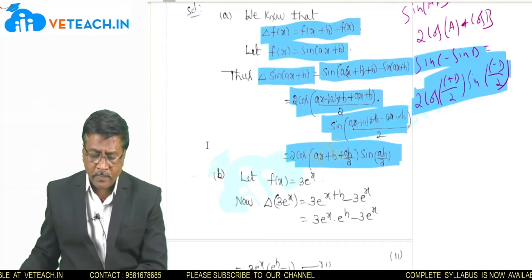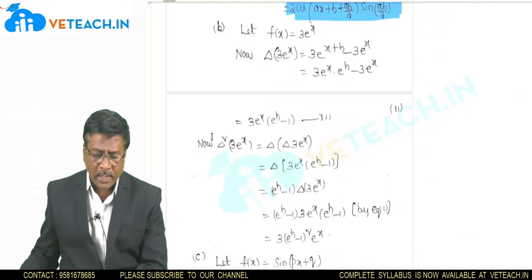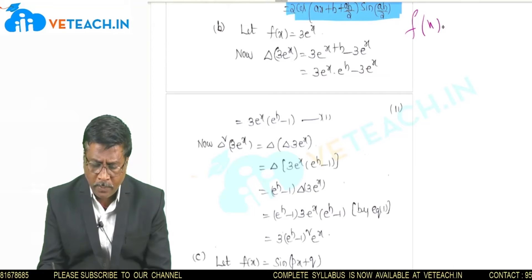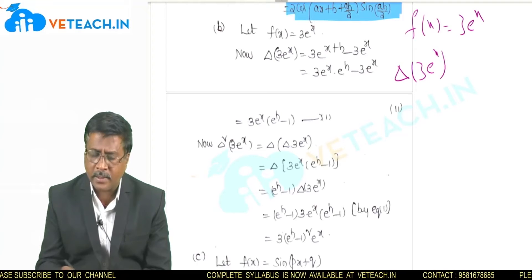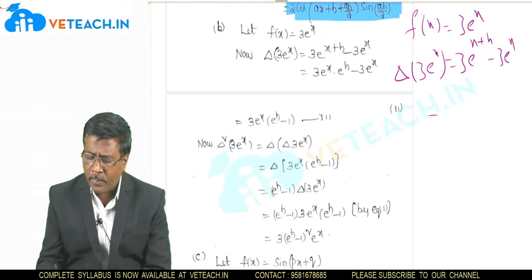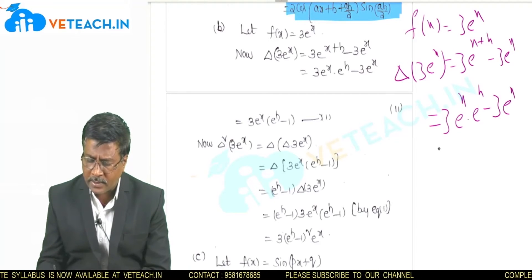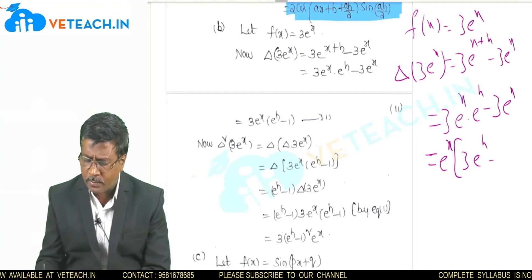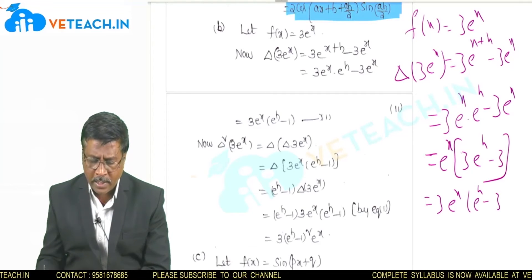The second problem is delta squared of 3·eˣ. We take f(x) = 3·eˣ. The first forward difference, delta of 3·eˣ, equals 3·e^(x+h) − 3·eˣ. Since the bases are equal, we write this as 3·eˣ·eʰ − 3·eˣ, and taking eˣ and 3 as common factors: 3·eˣ·(eʰ − 1).